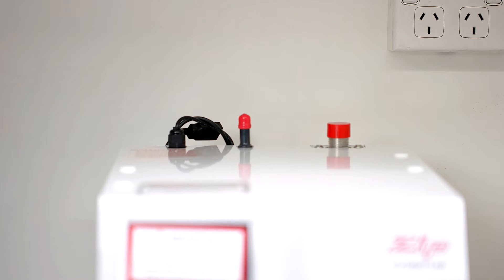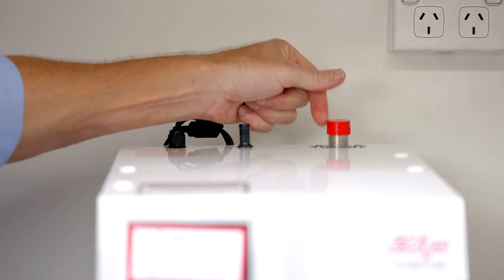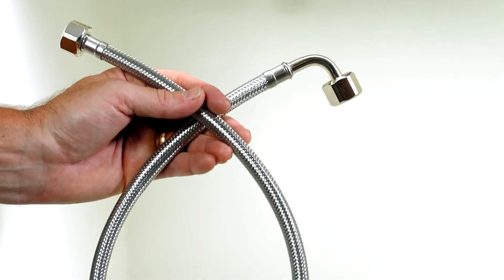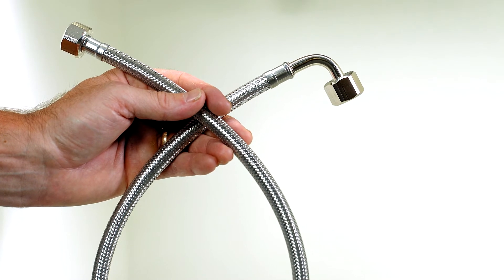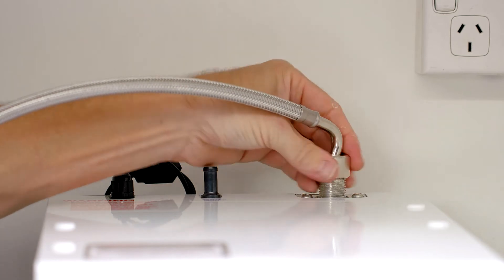Next, remove the dust caps from the outlets and remove the cap from mains in. Next, we need to connect the command center to the mains water supply. Use the supplied braided hose for this connection. Connect the end with the elbow to the mains in on the command center.